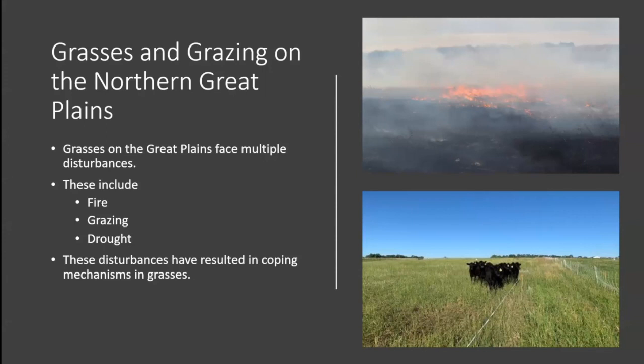As was kind of mentioned yesterday, if you look at our grasslands in the northern plains, they're very much developed under disturbance. Our native grasses have had to deal with fire, grazing, and drought, and even our introduced grasses have had to undergo grazing and respond to defoliation. Grasses have a tendency to develop coping mechanisms, and one of these persistence mechanisms is axillary buds.